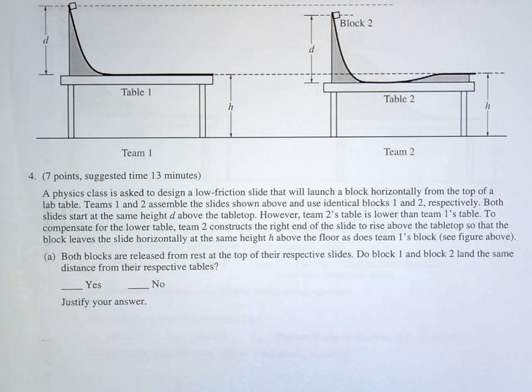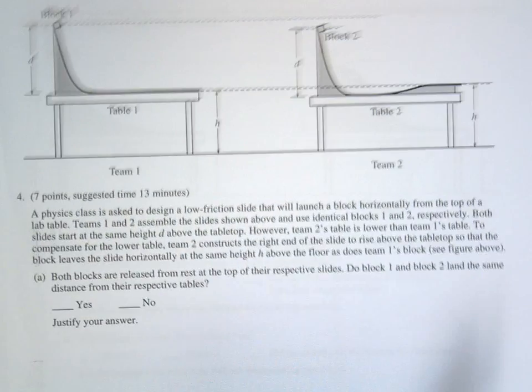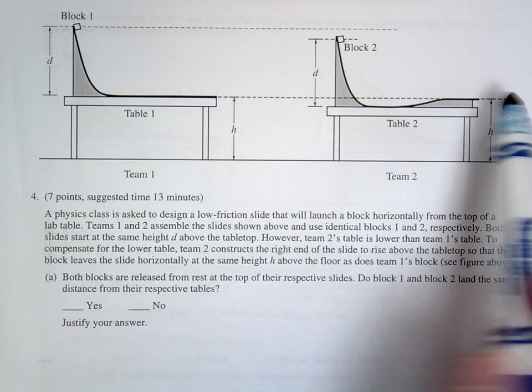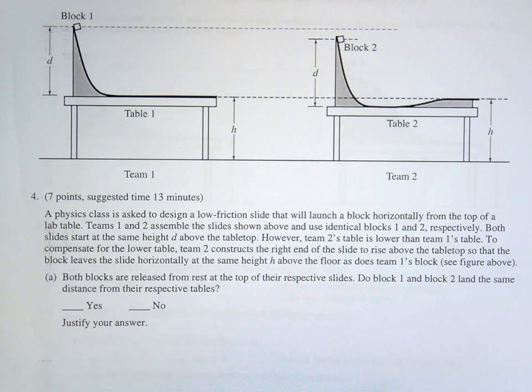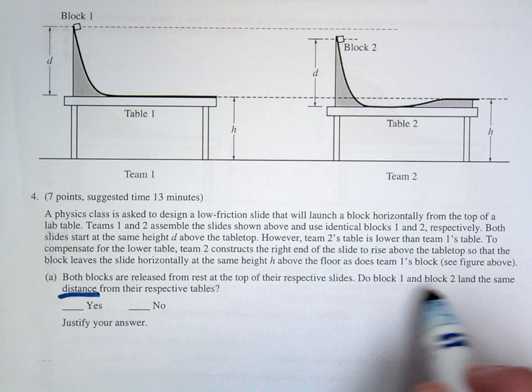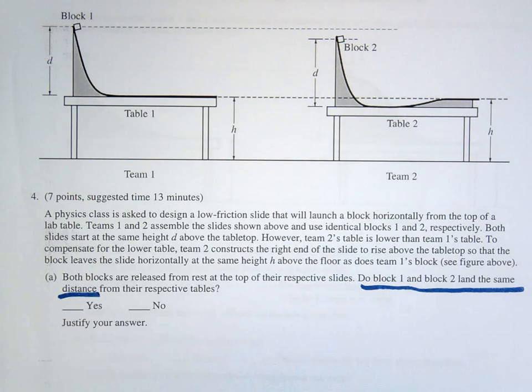This is the 2017 AP Physics 1 FRQ question number 4. In this question we have two ramps here and they're being dropped off a table. When they leave the table, the question is basically asking which one lands a greater distance, or do they land the same distance.